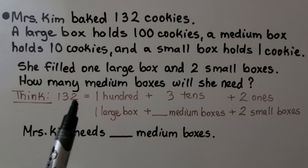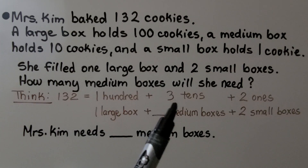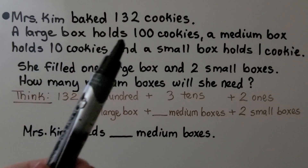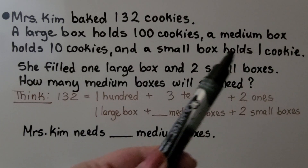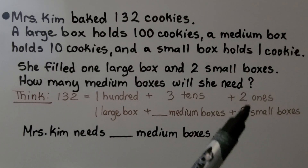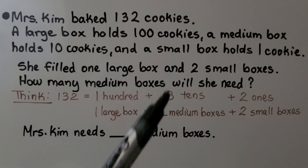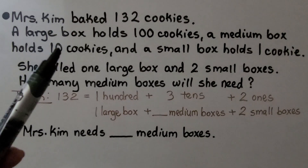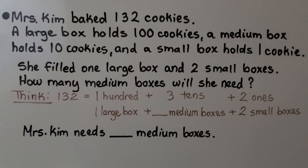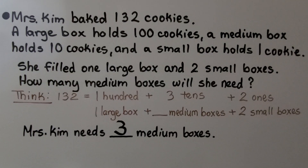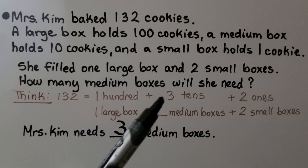We know that 132 is one hundred, three tens, and two ones. The one large box holds one hundred. The two small boxes hold the two ones. We need to find how many medium boxes she used — a medium box holds ten cookies. There are three tens, so she needs three medium boxes. Because each box holds ten: ten, twenty, thirty — that's the three in one hundred thirty-two, the three tens.